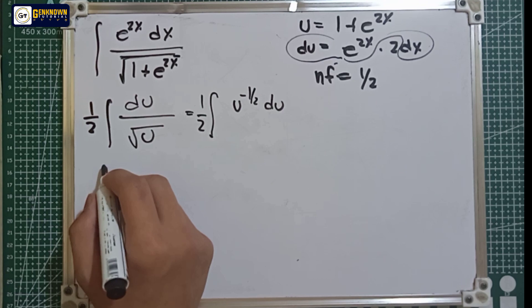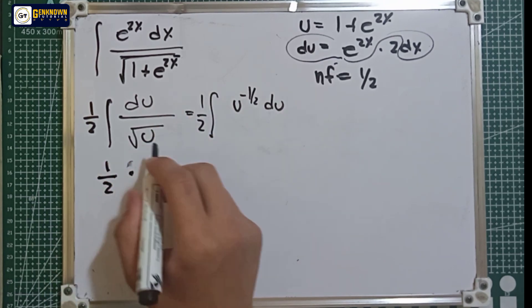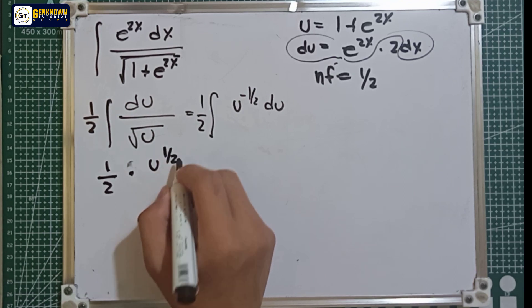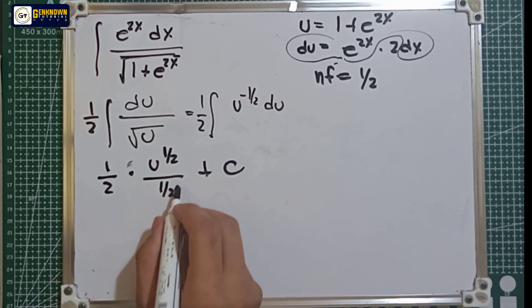Integrate na natin. We have 1 over 2 integral, I mean multiply by du raised to 1 over 2 over 1 over 2 plus the constant. This will become 1.